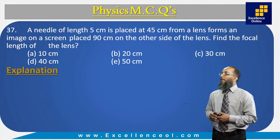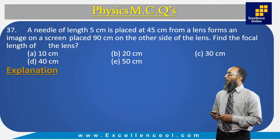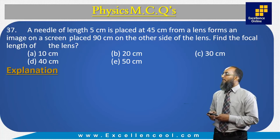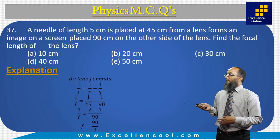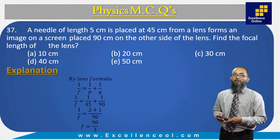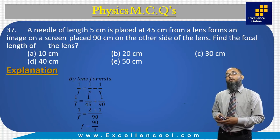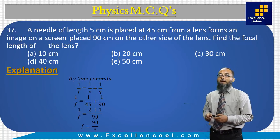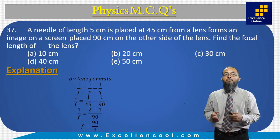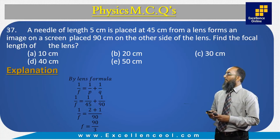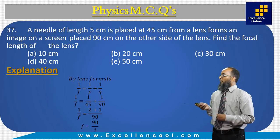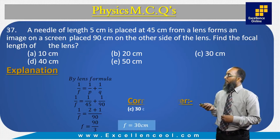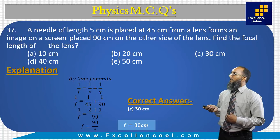A needle of length 5 cm is placed 45 cm from a lens and forms an image on a screen placed 90 cm on the other side. Using the lens formula 1/f = 1/p + 1/q, with object distance p = 45 cm and image distance q = 90 cm, substituting and solving gives focal length f = 30 cm. The correct answer is C: 30 centimeters.